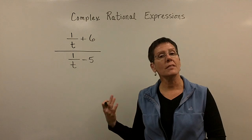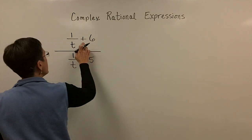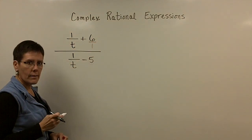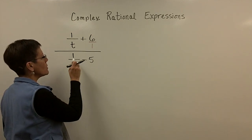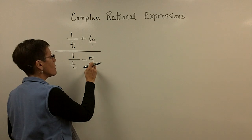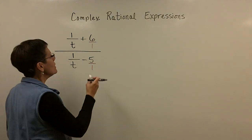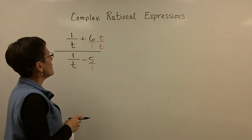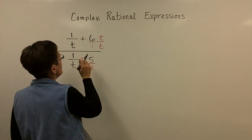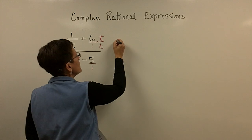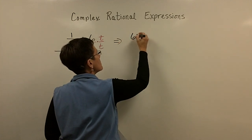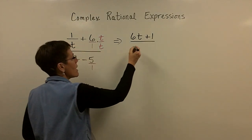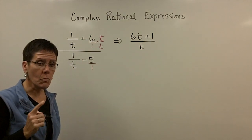I'm going to share with you first the same method we did before. That was to add these two fractions: one over t plus six over one. So I'm going to add those two fractions first. I've got to get a common denominator, so I've got to multiply top and bottom by t. So one plus six t is going to be my numerator — I'll write it as six t plus one, putting it in descending order. They have a common denominator of t. I'm done with the numerator.